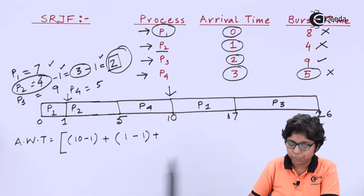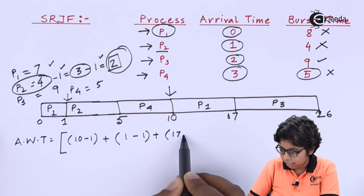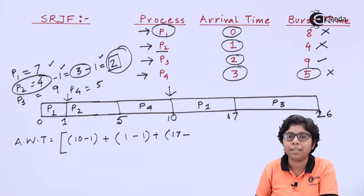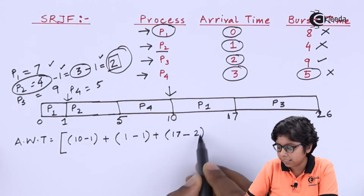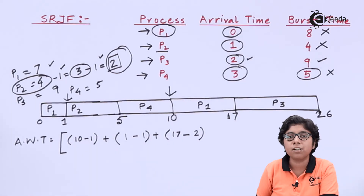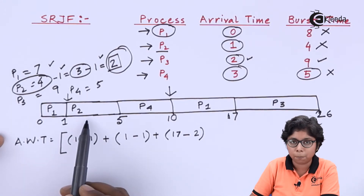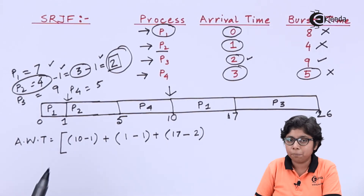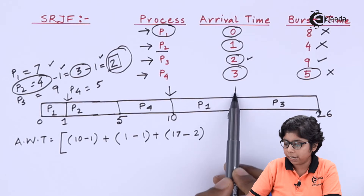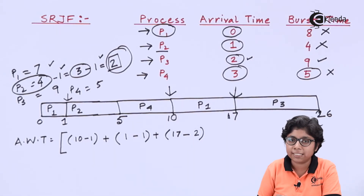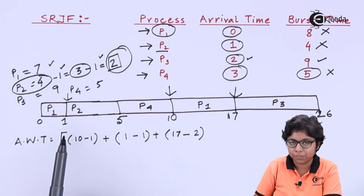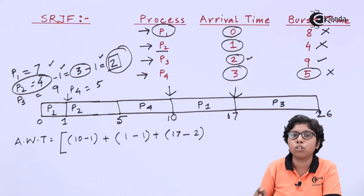For P3, it starts execution at 17ms and arrived at 2ms. So the waiting time is 17 minus 2, which is 15ms. This subtraction is important because P3 had already arrived at 2ms but was not executed since P2 had a shorter burst time. P3 had to wait while other shorter processes ran.